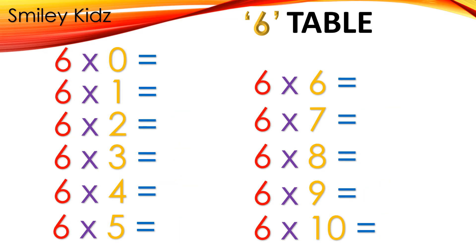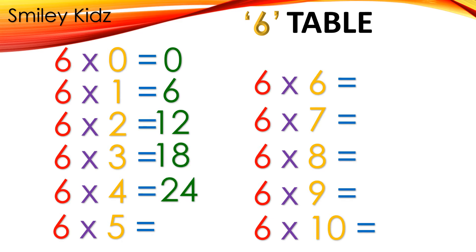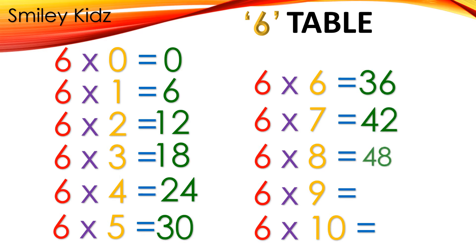Table 6: 6×0=0, 6×1=6, 6×2=12, 6×3=18, 6×4=24, 6×5=30, 6×6=36, 6×7=42, 6×8=48, 6×9=54, 6×10=60.